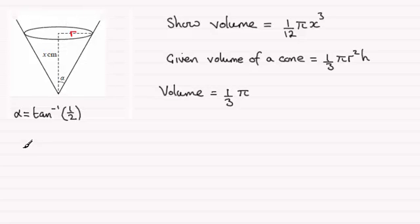We know that the tan of the angle alpha would equal the opposite side r divided by the adjacent side, r divided by x. But if I rearrange this equation, tan alpha would equal a half.